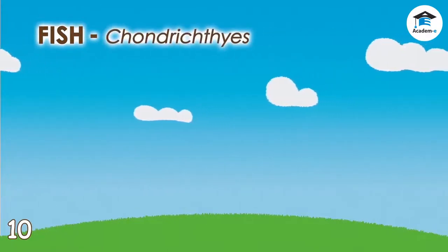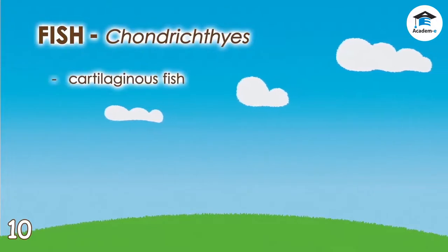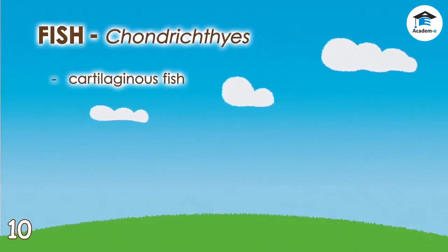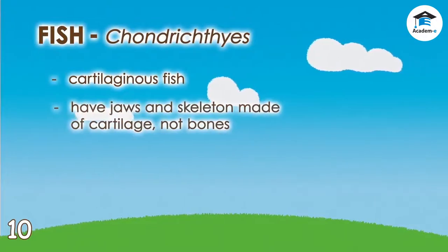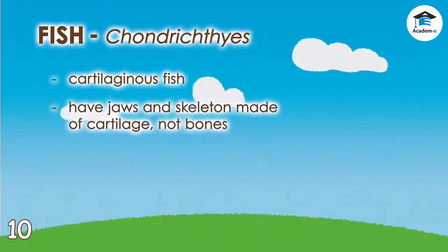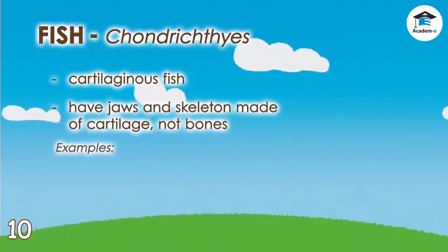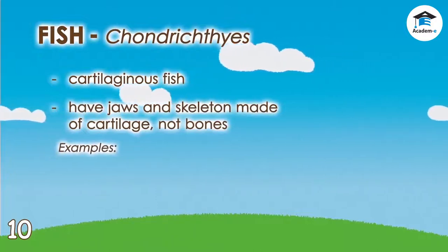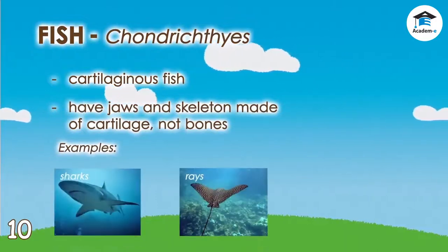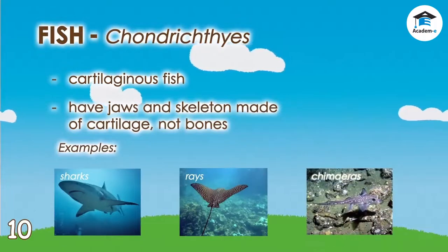Chondrichthyes, or cartilaginous fish: unlike bony fish, the jaws and skeleton of these fishes are made of cartilage, not bones. This fish group includes sharks, rays, and chimeras.